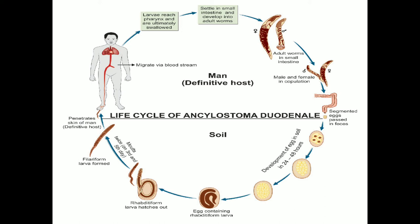The life cycle of Ancylostoma duodenale is completed in a single host. Humans are the only natural definitive host — there is no intermediate host, unlike some other helminths. The infective form of this parasite is the third-stage filariform larva.